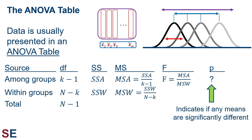Note that if we fail to reject the null hypothesis, we don't prove that the means are all the same — we decide they appear equal because we looked for evidence they differed and didn't find it. Published tables will often omit the sums of squares column since it's easily figured out from the degrees of freedom and mean sums columns. That's all there is to doing an ANOVA: calculating variances and doing an F-test. But there are a few other things we need to be aware of.